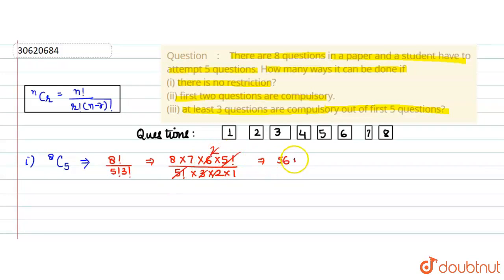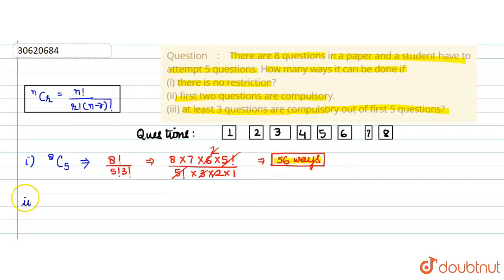This means that if a student has to attempt any 5 questions out of 8, then without any restrictions, there are 56 ways to choose those 5 questions. Now, let us come to the second part.